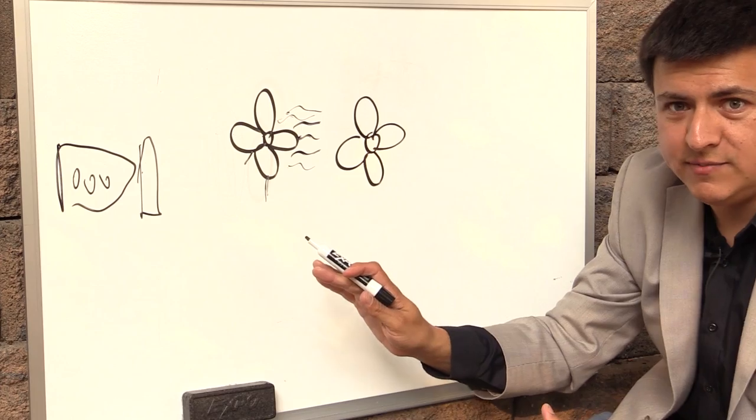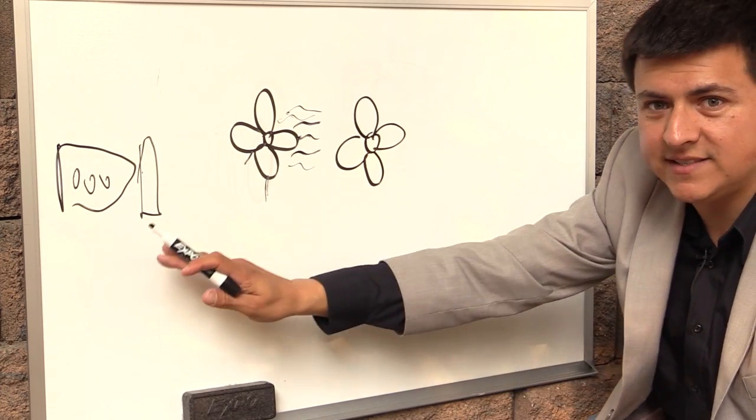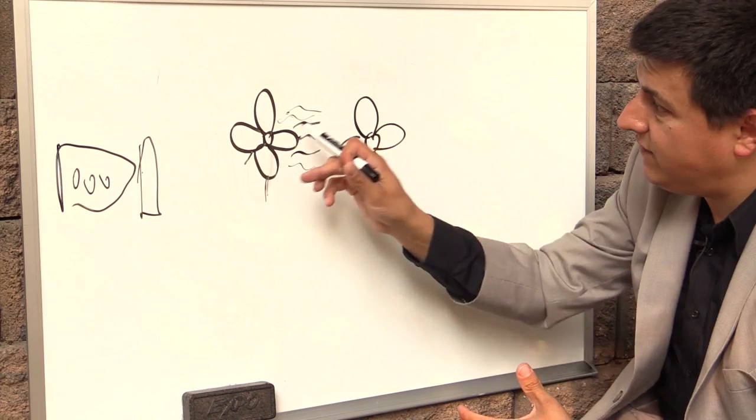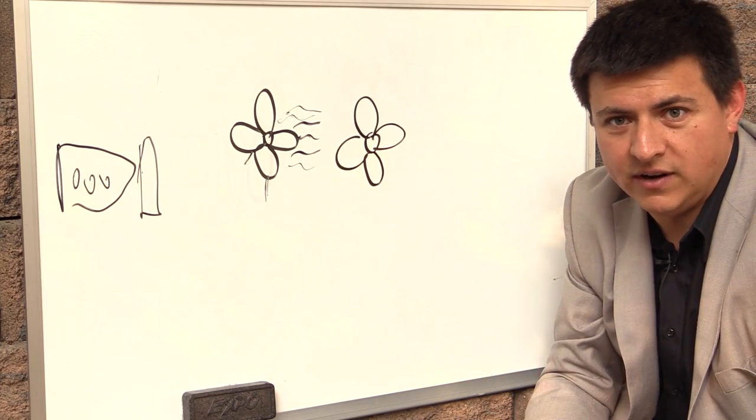Now that's what makes an automatic transmission vehicle able to stop at a stop sign and not stall the engine like a manual transmission would because you have this thing that's not physically connected all the time with one another.